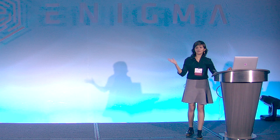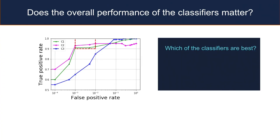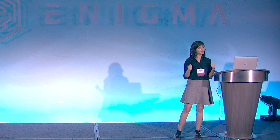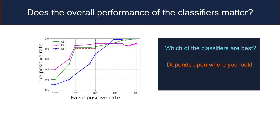Now suppose we've built our classifier — how do we evaluate its performance? In general machine learning, we focus on overall performance. But in security, the overall performance doesn't matter much. We are concerned about rare events. An end user has far more benign files than malware files, so we need to make sure false positive rates are really small. Instead of looking at overall performance, we need to compare classifiers in the zone of interest: false positive rate below 1% with true positive rate over 90%.